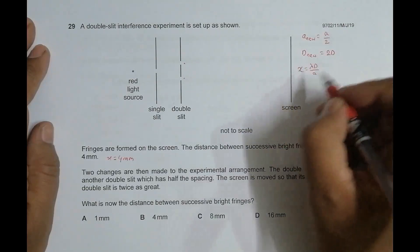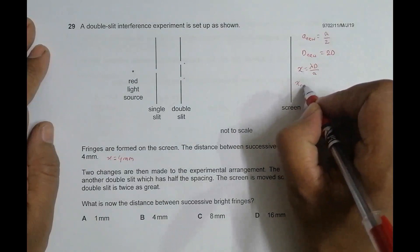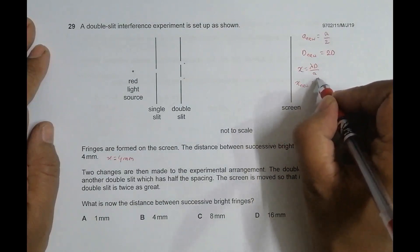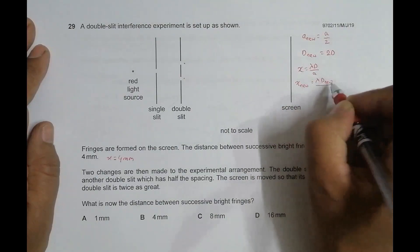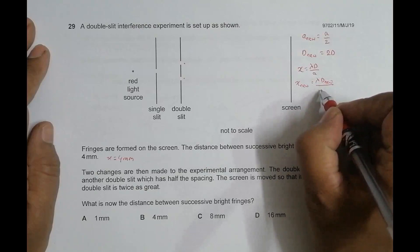Now we have x_new is equal to lambda, lambda is the same, D has changed, D is D_new, and in place of a we will have a_new.